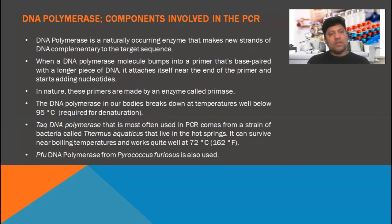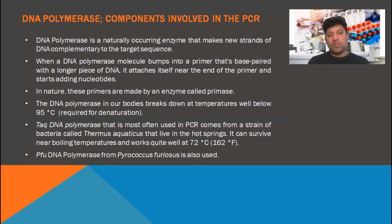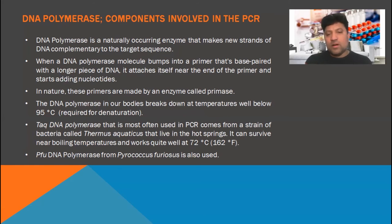The DNA polymerase enzyme is a naturally occurring enzyme that makes a new strand of DNA complementary to the target sequence. When the DNA polymerase molecule bumps into a primer that base pairs with a longer piece of DNA, it attaches itself near the end of the primer and starts adding nucleotides. In nature, these primers are made by an enzyme called primase. The DNA polymerase in our body breaks down at temperatures well below the 95 degrees centigrade required for denaturation. The Taq DNA polymerase most often used in PCR comes from a strain of bacteria called Thermus aquaticus, which lives in hot springs. It can survive near boiling temperatures and works quite well at around 72 degrees centigrade.